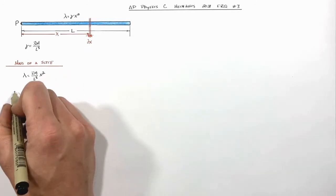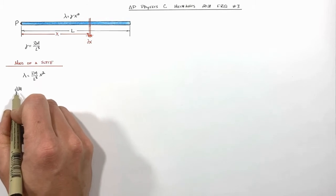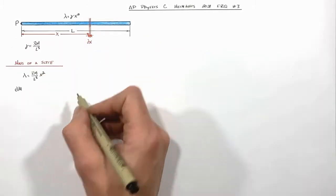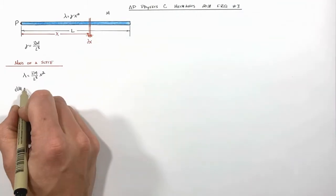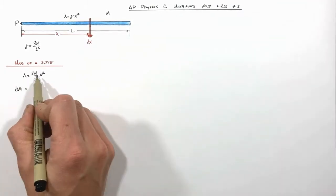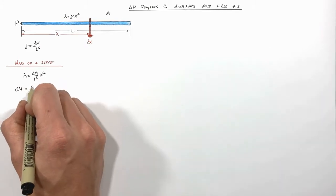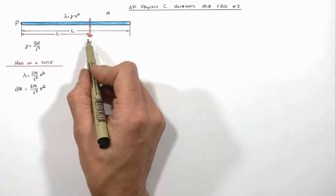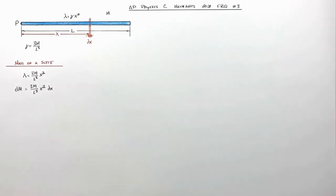The mass of a single slice — which I'll call dm, since it's an infinitely small chunk of the total mass M — is equal to λ times the length of our slice, which is dx. So dm = λ·dx = (3m/L³)·x²·dx.